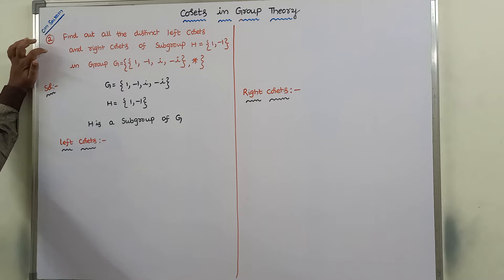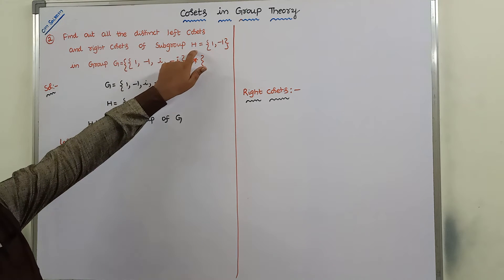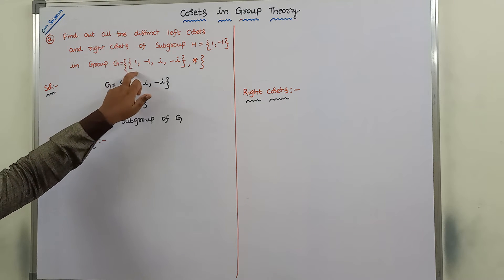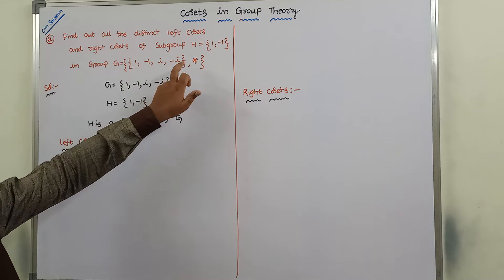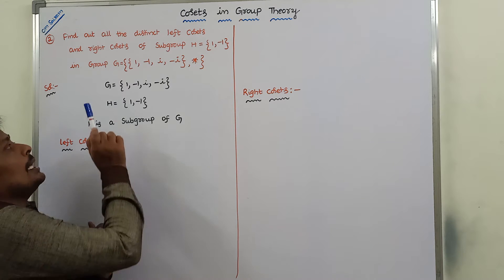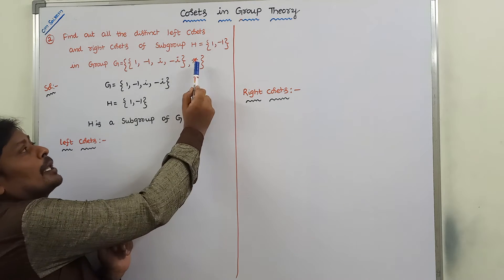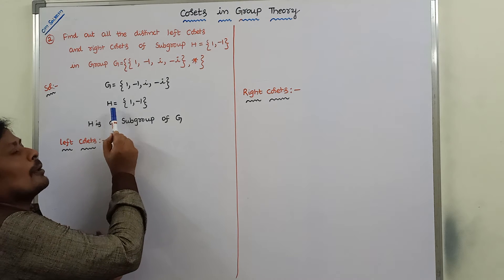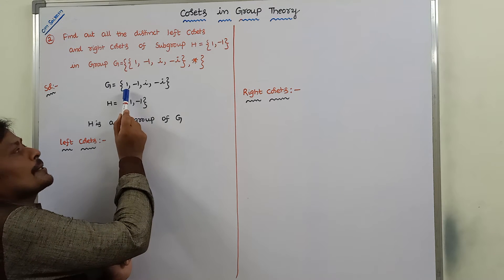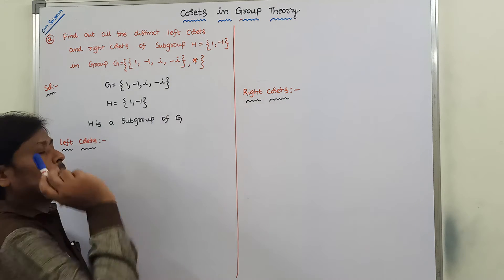The given problem is: find out all the distinct left and right cosets of subgroup H = {1, -1, i, -i} with respect to the binary operation star. The given group G = {1, -1, i, -i} with respect to the binary operation star, and H = {1, -1}. Since 1 and -1 are elements of G, we can say that H is a subgroup of G with respect to the binary operation star.